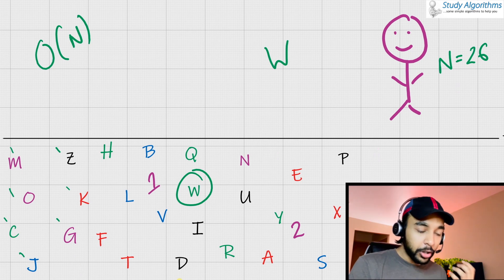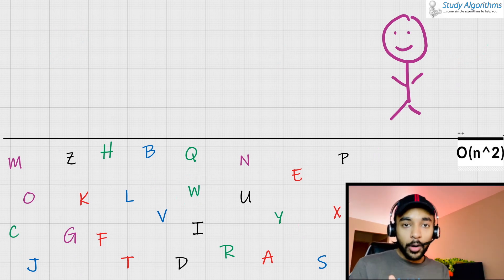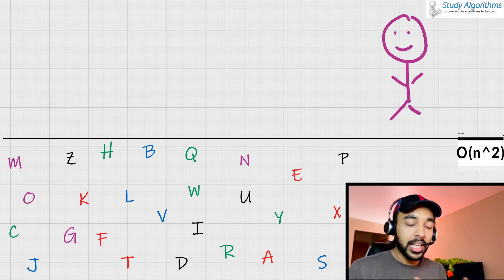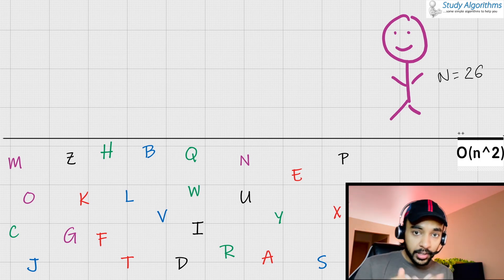Moving forward, now let us look at what do you mean by order of N squared. Now, I ask you, okay, sort all of these alphabets in an alphabetical order. That means A, B, C, D, E, F, and so on. So you know that the value of N equals to 26 right now, right? So what would you do?